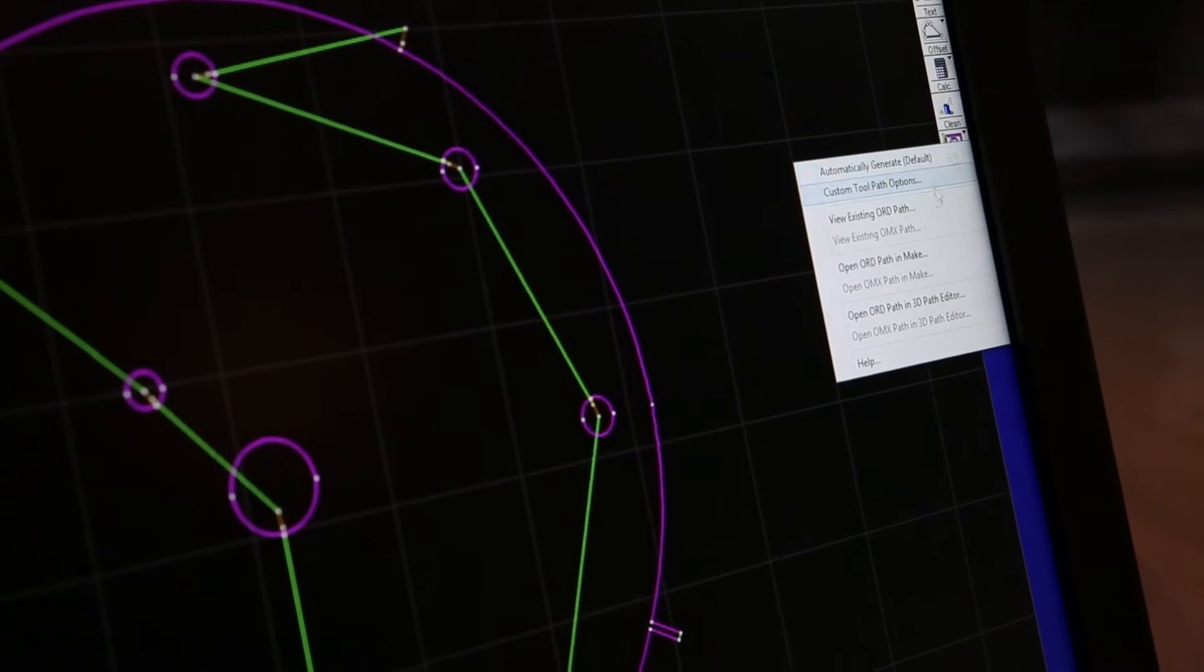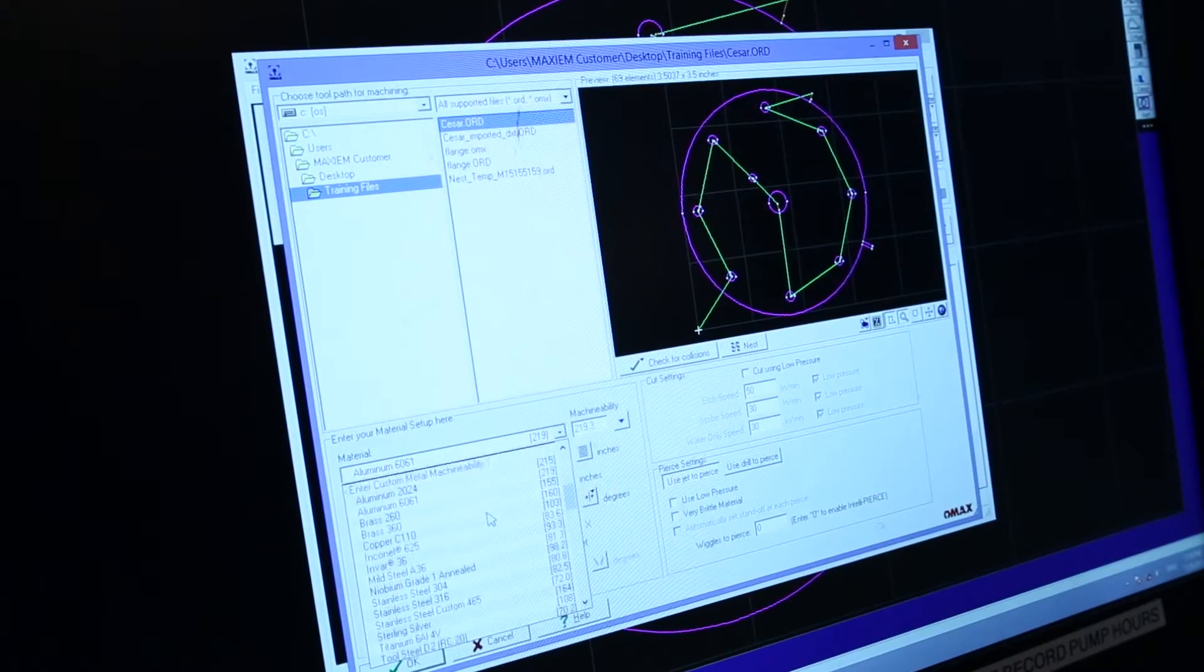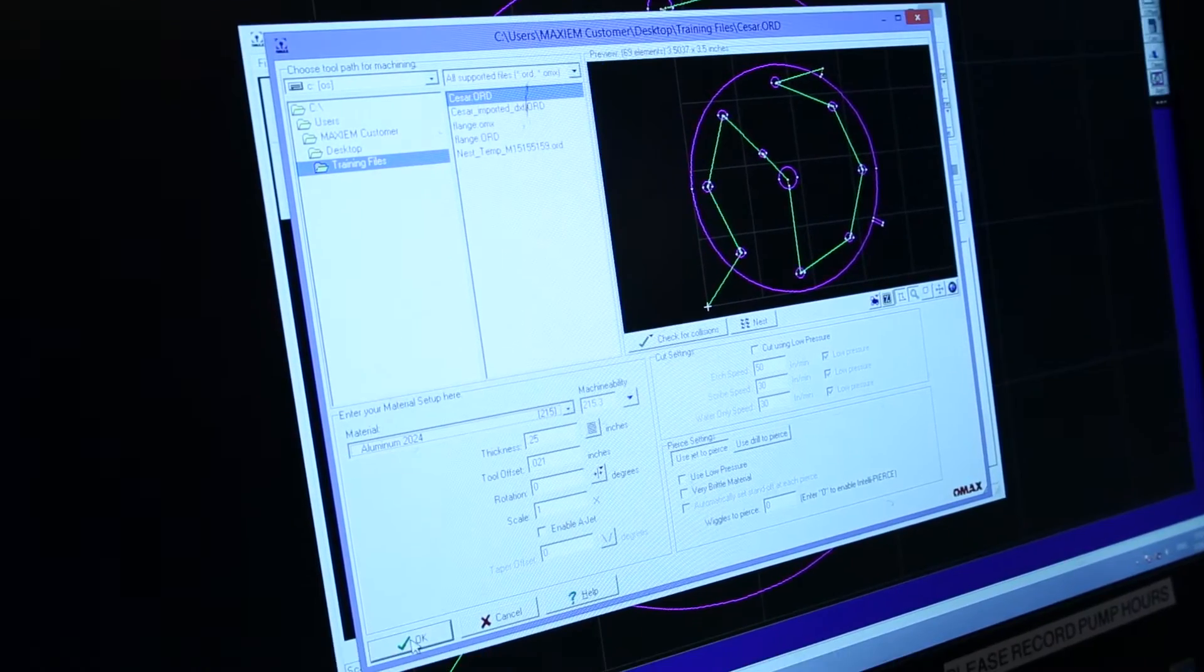Open your path in Make and set the starting point. This is typically the bottom left corner. Then, select the type of material from the drop-down list and set the thickness.